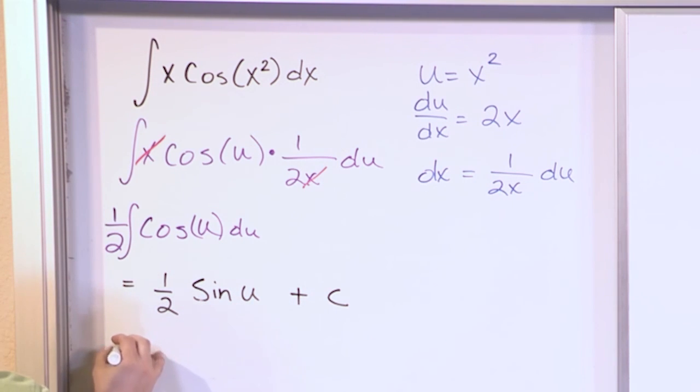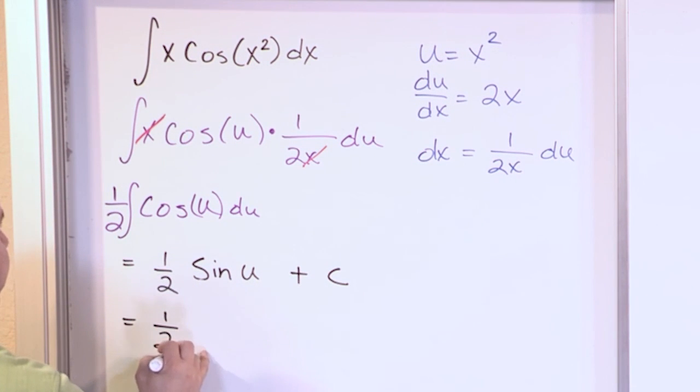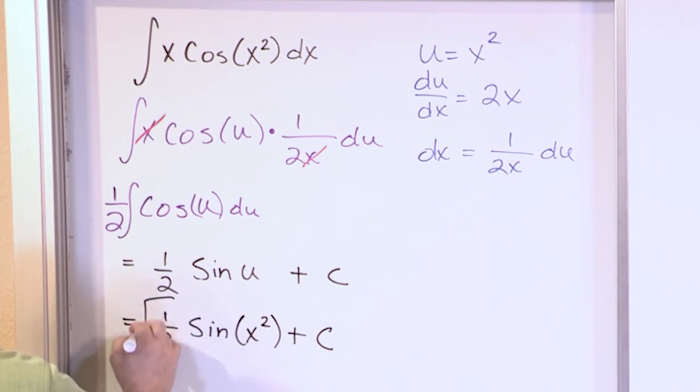But that's not our answer because that's in terms of u, and we already said u is equal to x squared. So what we have is one half times the sine of x squared plus a constant of integration. This is the answer: one half sine of x squared plus a constant.